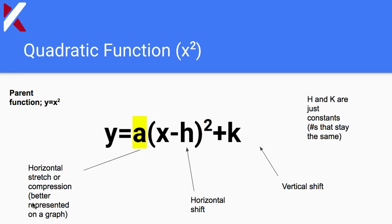The next type of function is the quadratic function. The parent function of a quadratic is y = x². It is called quadratic because you square whatever input you plug in. As you can see, there are a bunch of transformations you can add to this function, just as you can add to any type of parent function.